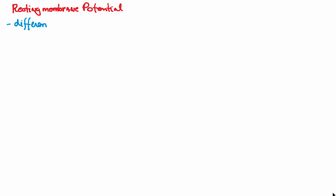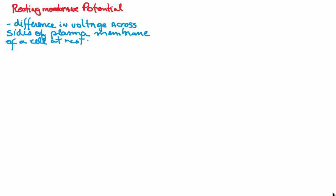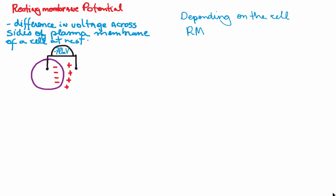Let's try to explain what a resting membrane potential is. Resting membrane potential is the difference in voltage across sides of the plasma membrane of a cell at rest, meaning that a cell is not being stimulated by anything else. If you put a voltmeter inside the cell and on the outside of the cell, it should read a certain value.